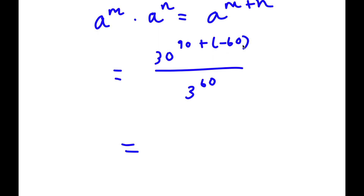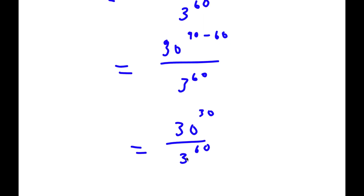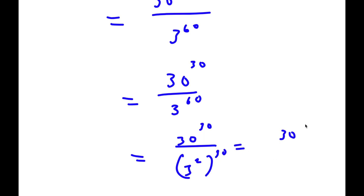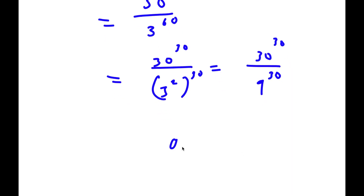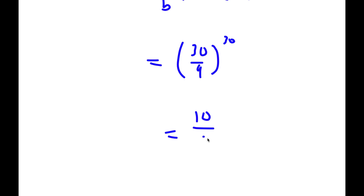Since 90 plus negative 60 is the same as 90 minus 60, and 90 minus 60 is 30, I have 30 to the power of 30 over 3 to the power of 60. Using the rule a to the power of m over b to the power of m equals a over b to the power of m, this is equal to 30 over 9 to the power of 30, which equals 10 over 3 to the power of 30. So this is my answer.